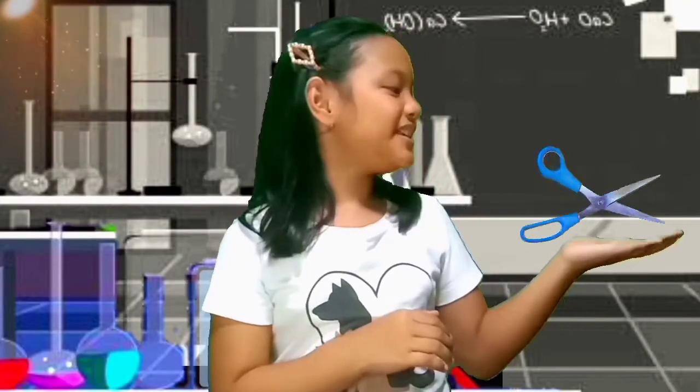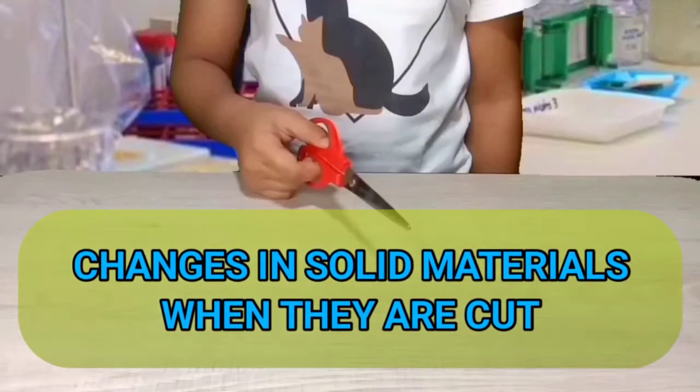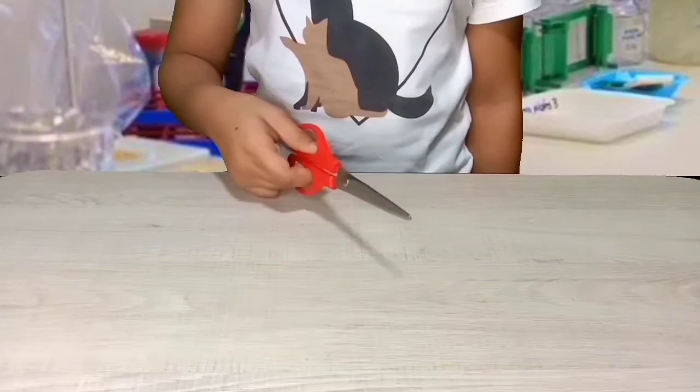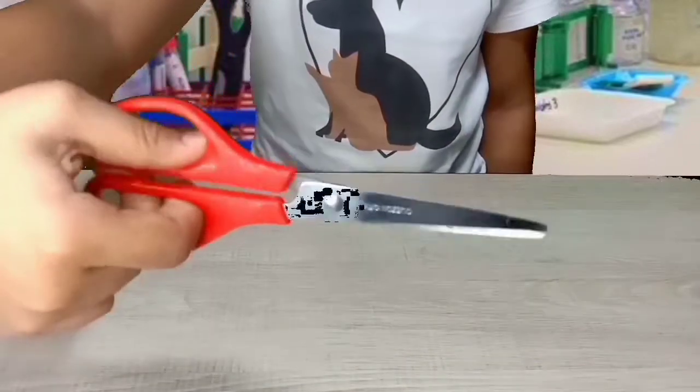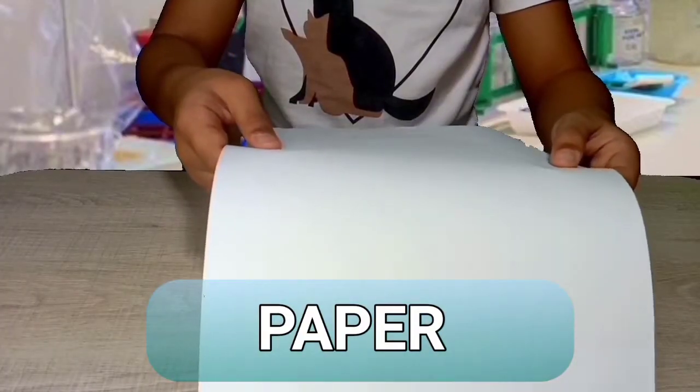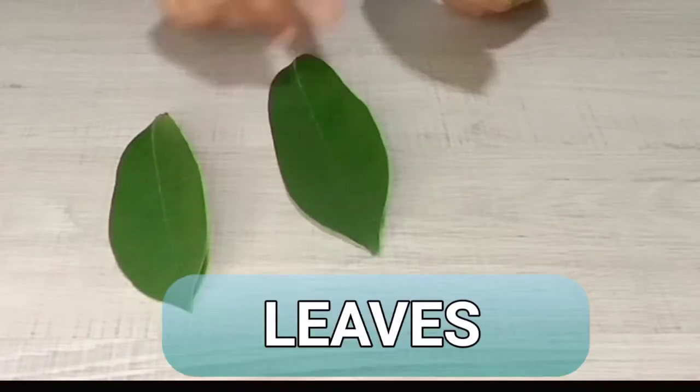For this activity, we are going to use a pair of scissors! I will cut each of the given materials. We will observe together what happens to each of the materials. Let's prepare the materials. Our materials are a pair of scissors, a piece of paper, piece of cardboard, and leaves.